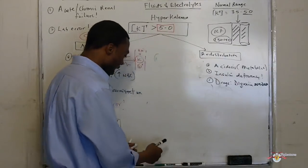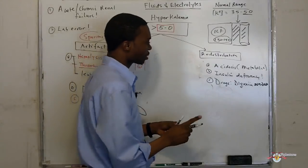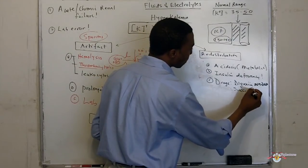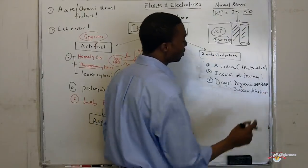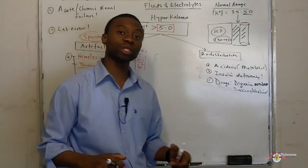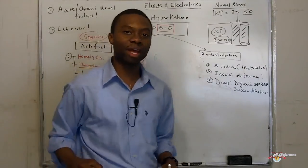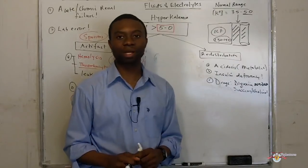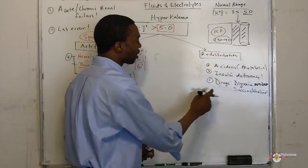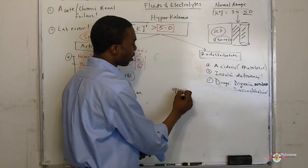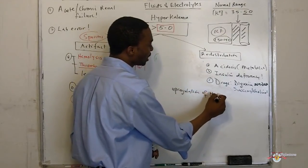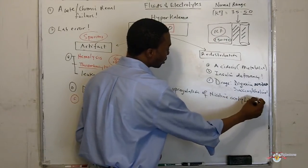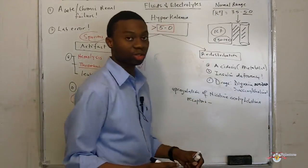What other drugs can cause hyperkalemia? Succinylcholine. What do we use succinylcholine for? Succinylcholine is a drug used to paralyze patients when we have to intubate them, especially in the emergency room. One of the side effects is causing hyperkalemia. The mechanism of action is that succinylcholine causes upregulation of nicotinic acetylcholine receptors on the muscle membrane.